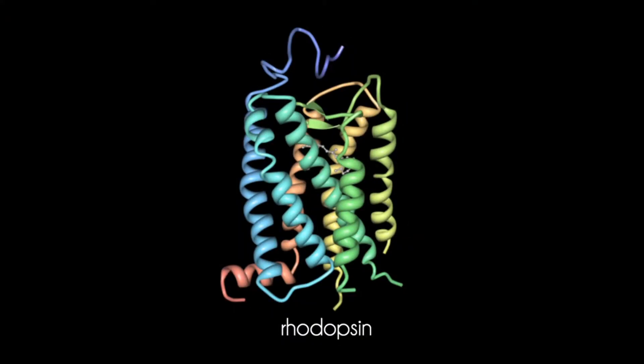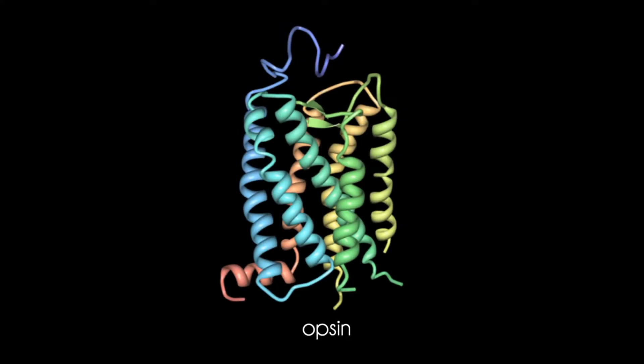Rhodopsin is a photoreceptor composed of two parts: the chromophore 11-cis-retinal and the protein opsin. Retinal is a ligand composed of a polyene chain and a beta-ionone group.